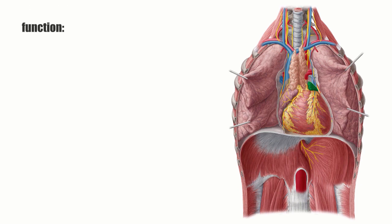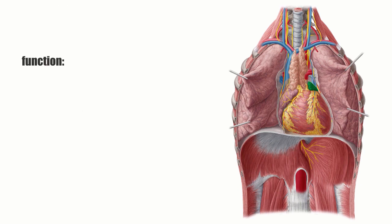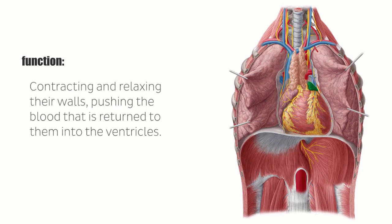The main function of the atria is to facilitate circulation by rhythmically contracting and relaxing their walls, pushing the blood that is returned to them via the major venous vessels during ventricular systole into the ventricles.